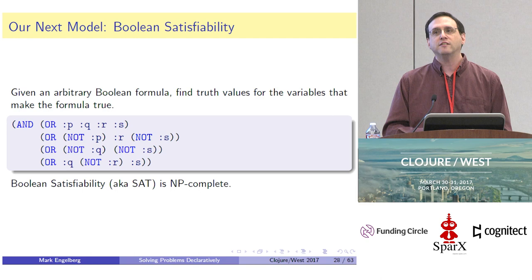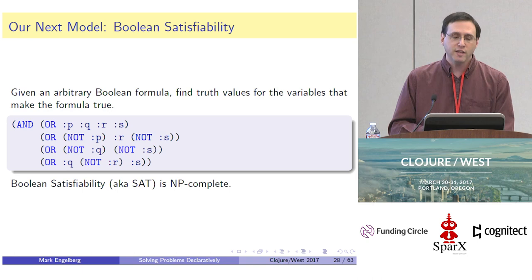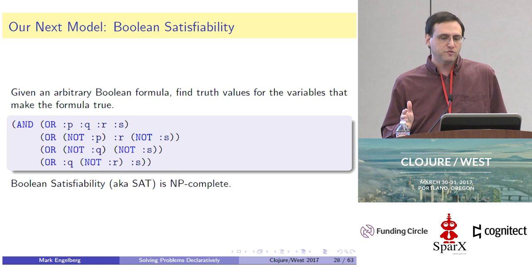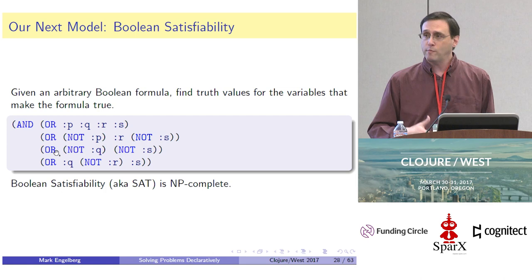Moving on to our next model: the Boolean Satisfiability problem. The Boolean Satisfiability problem is an NP-complete problem where you're given an arbitrary Boolean formula, and you're trying to find a set of truth values for the variables that make this formula evaluate to true. I've given a sample formula using keywords as variables.